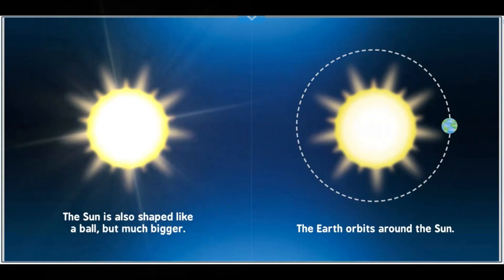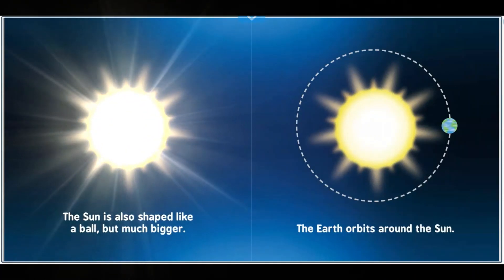The sun is also shaped like a ball, but much bigger. The Earth orbits around the sun.